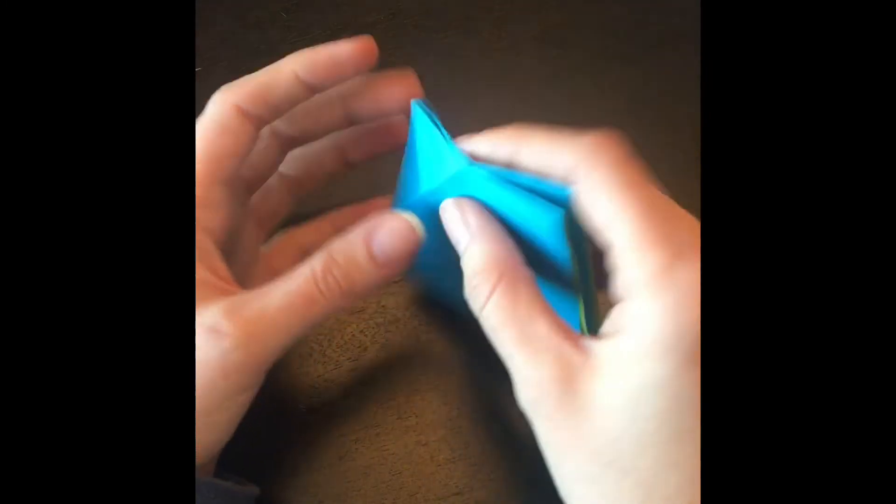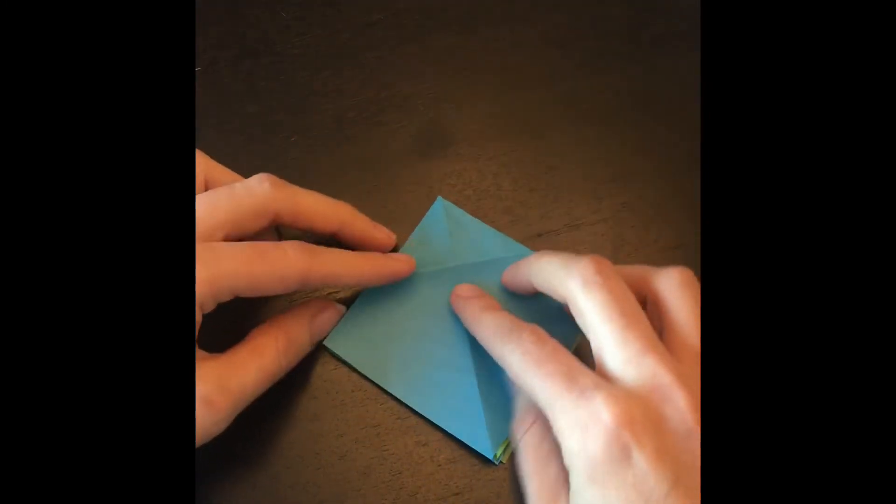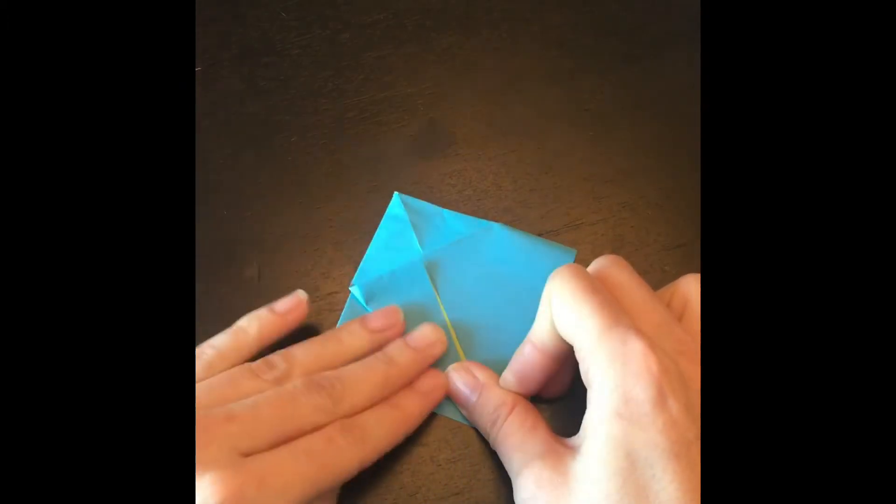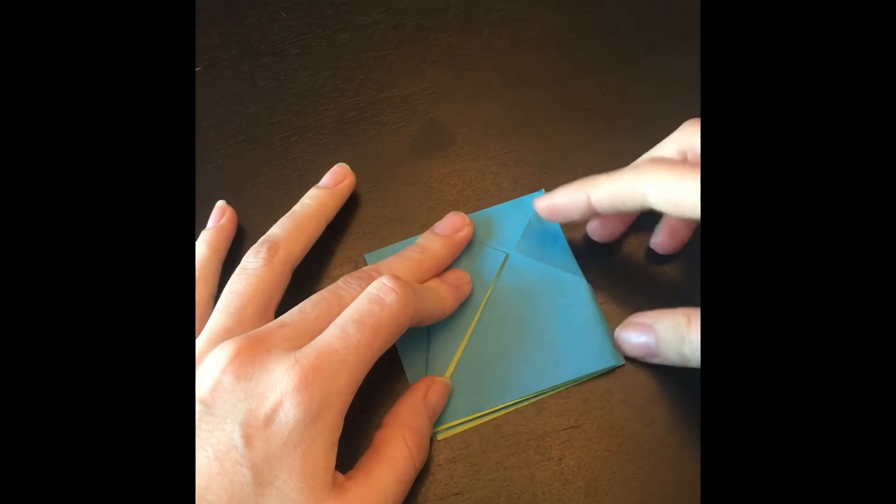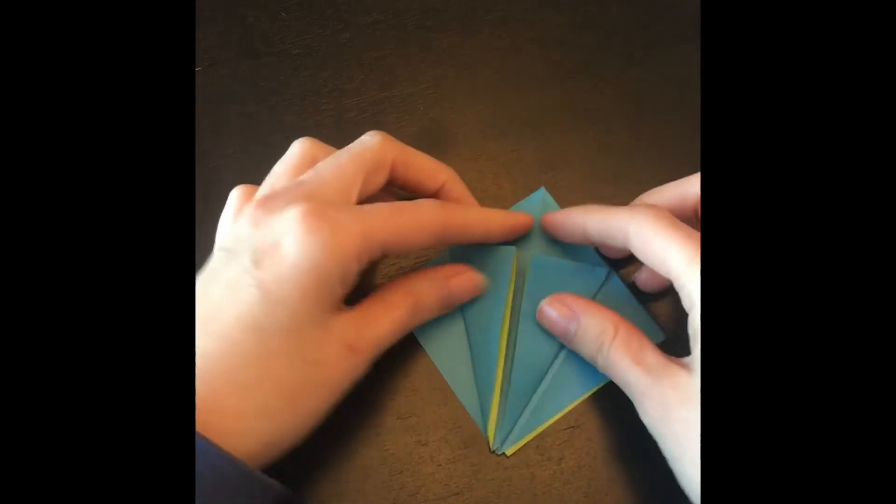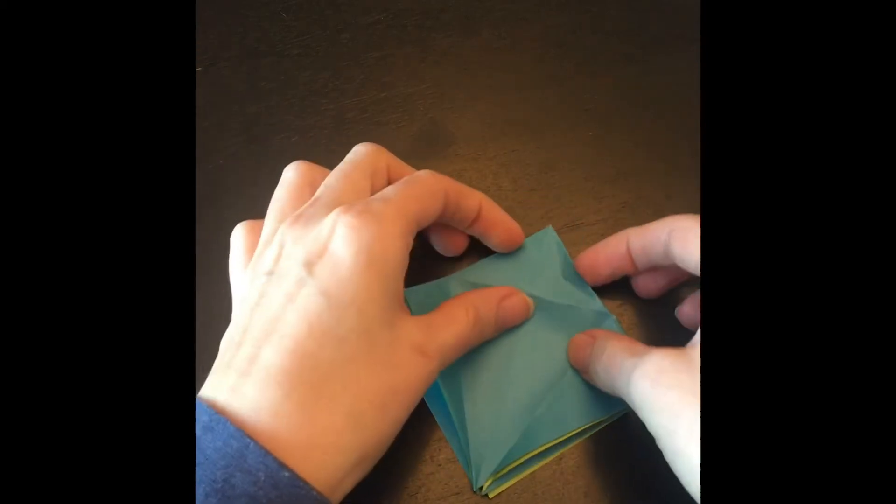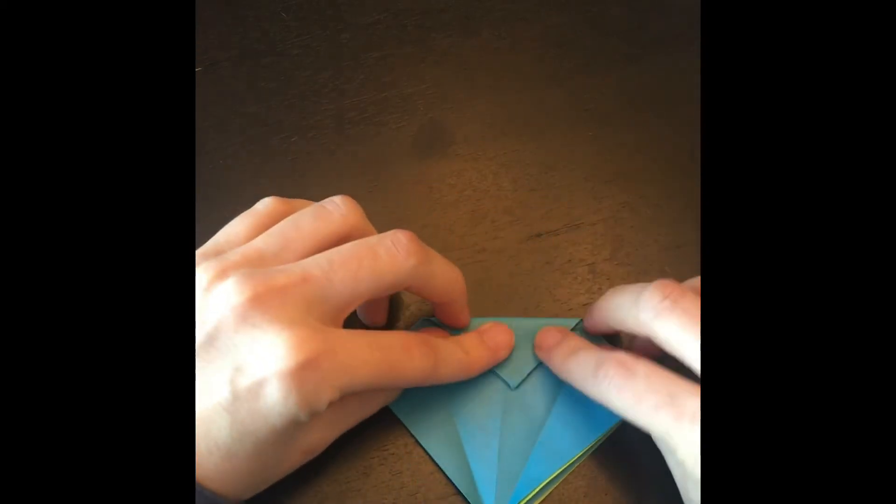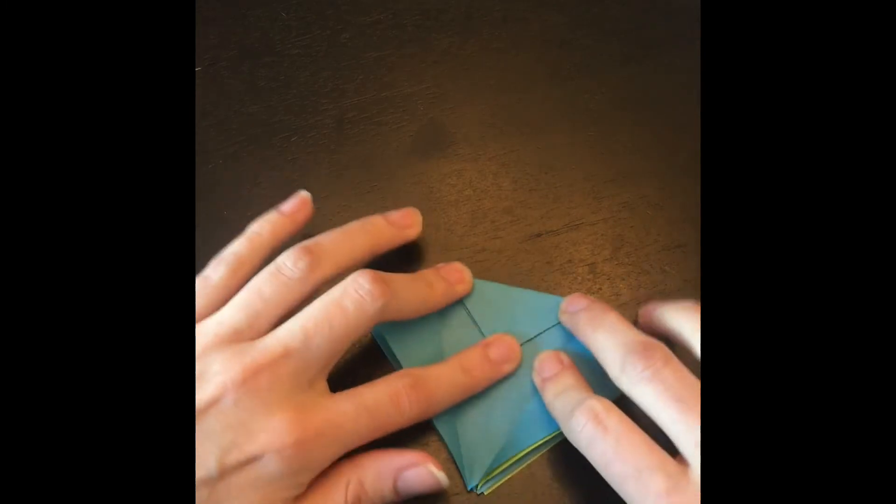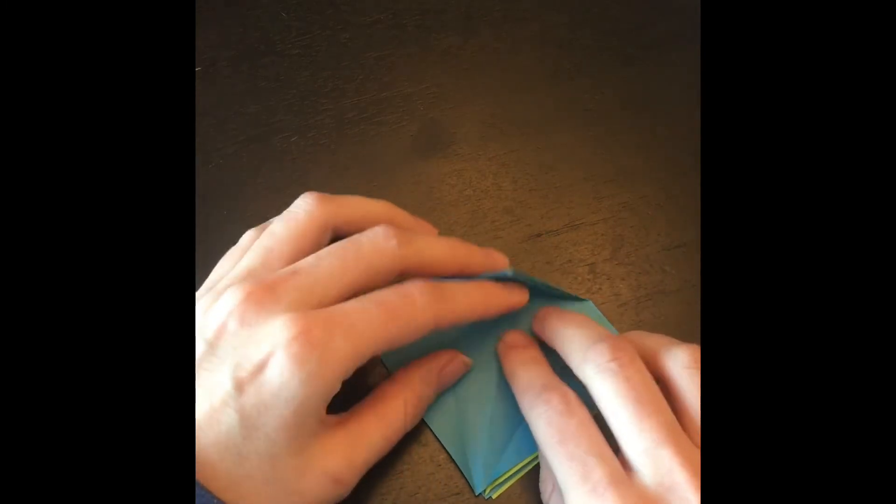And then we're going to flip it over and do the same thing on the other side. So do your ice cream cone, and then open the arm, and then bow. Funny, but easy to remember how to do the steps. And then you're going to open it back up.